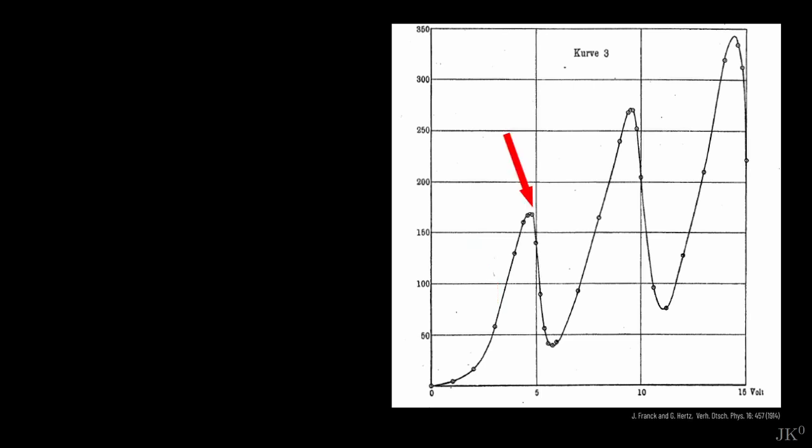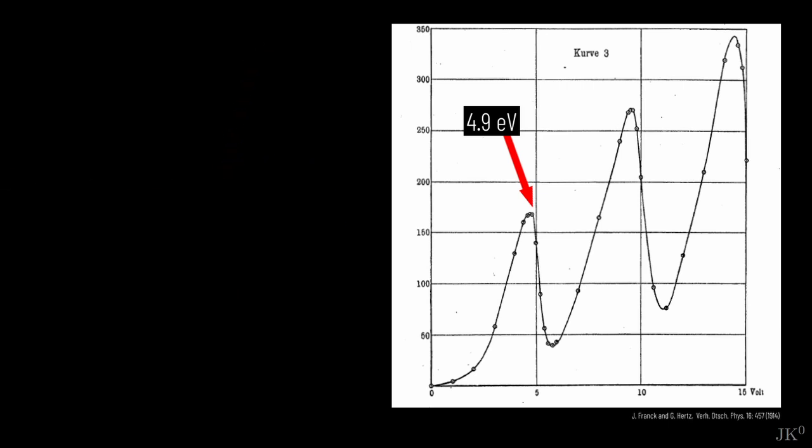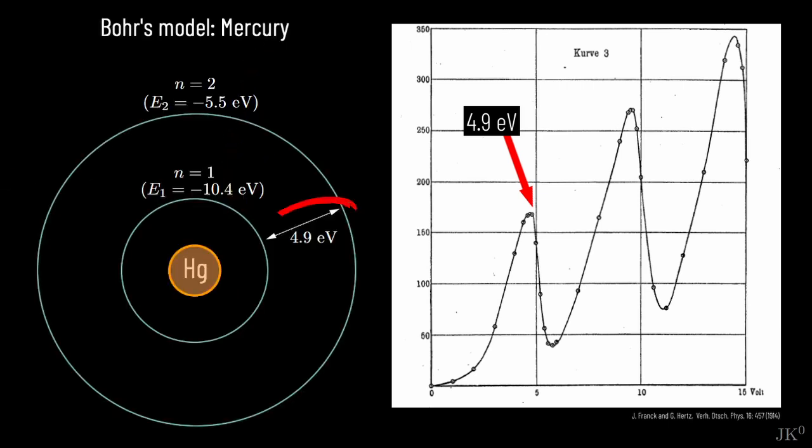When the accelerating voltage is 4.9 volts, the electrons will have 4.9 electron volts of energy when reaching the accelerating grid. Since 4.9 electron volts is exactly the energy difference between the first two atomic levels in mercury, electrons colliding with mercury atoms in the neighborhood of the grid will transfer this energy and will not pass the stopping potential, creating the drop in the collector's current.